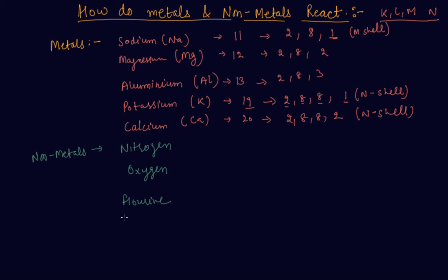fluorine, phosphorus, sulfur, and chlorine. The atomic number of nitrogen is 7,